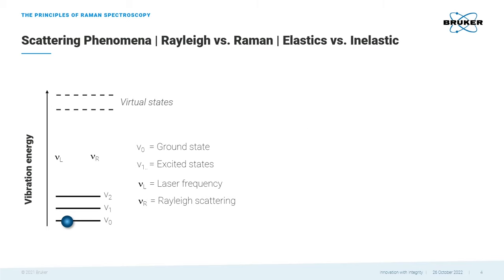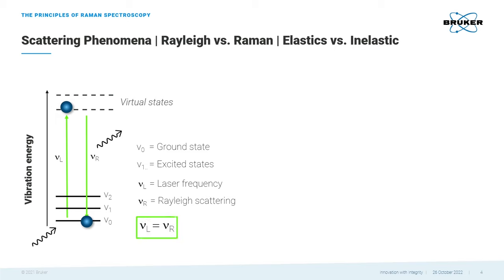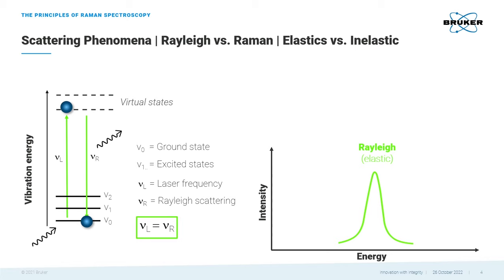In Rayleigh scattering, the laser photon excites the molecule into a virtual state. The molecule only stays in this state for a very short time, then falls back to the ground state. In this process, the light gets scattered. The scattered light has the same frequency as the incident light. This is Rayleigh or elastic scattering.